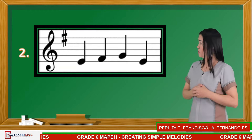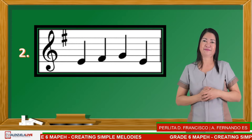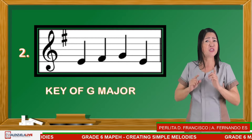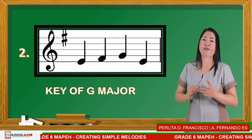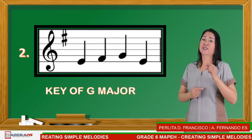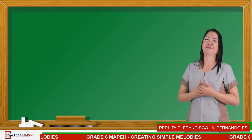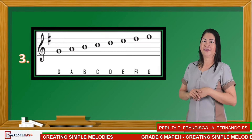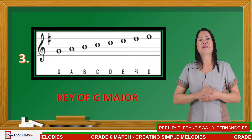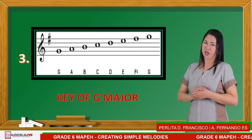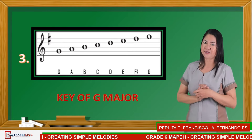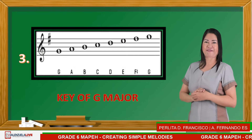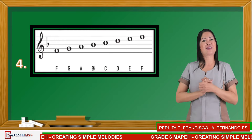What musical scale is shown in this picture? If your answer is key of G major, you are correct. By the way, how did you know that it is in the key of G major? Very good — correct, because it has one sharp placed on the fifth line of the staff. Number four, what musical scale is shown in this picture?